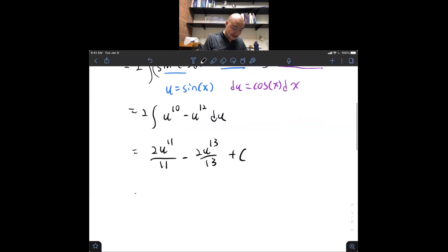And finally, substituting back in our choice for u, that's 2 sine to the 11th of x over 11, minus 2 sine to the 13th of x over 13, plus c.